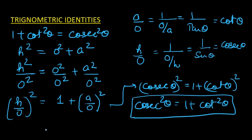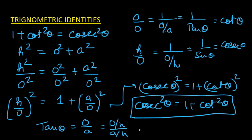One more thing to remember is that tan θ is opposite over adjacent. If we divide both the numerator and denominator by the hypotenuse, then O/H is sin θ and A/H is cos θ. So sin θ over cos θ is nothing but tan θ.